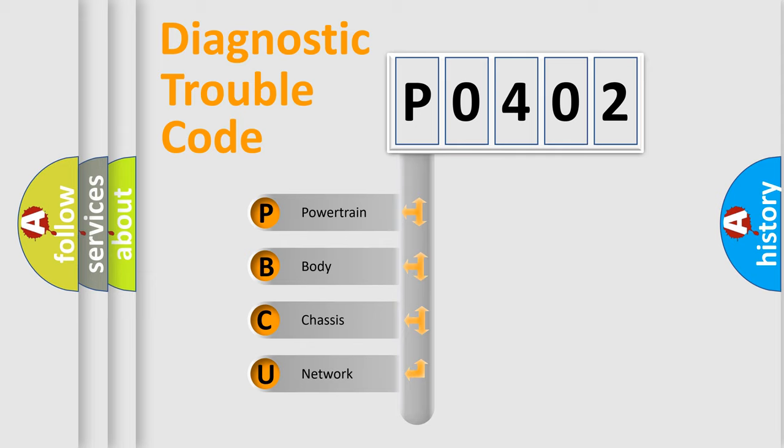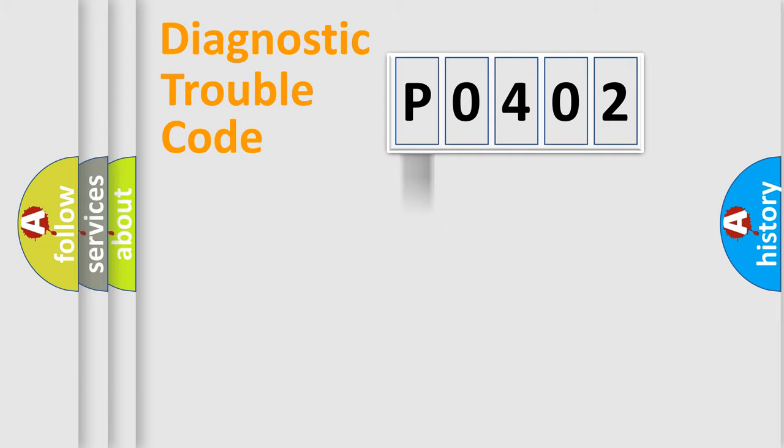We divide the electric system of automobile into four basic units: Powertrain, Body, Chassis, and Network. This distribution is defined in the first character code.